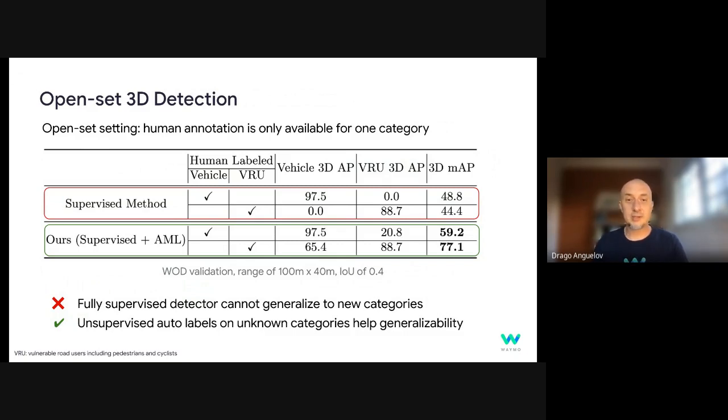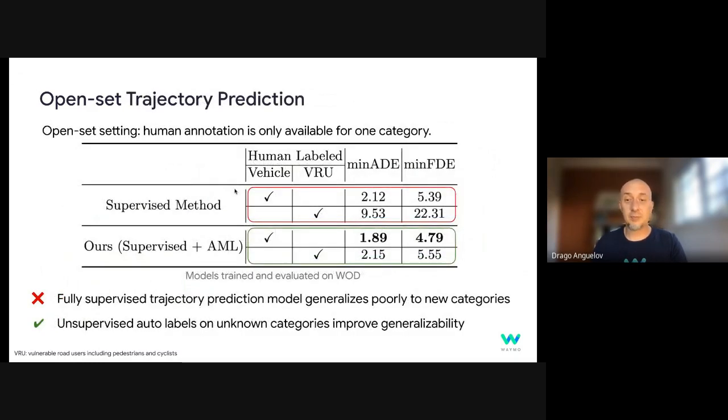And in terms of quantitative metrics in the open set setting, when we assume that human labels are only available for some categories and not others, so in this case, we can set up a test case where we have only vehicle labels available, but we don't have pedestrian labels, or vice versa. We found that unsupervised auto labels provide very helpful supervision, so we get quite reasonable results for the object we've never seen compared to the case of the unsupervised case. Obviously, we're not going to detect this object.